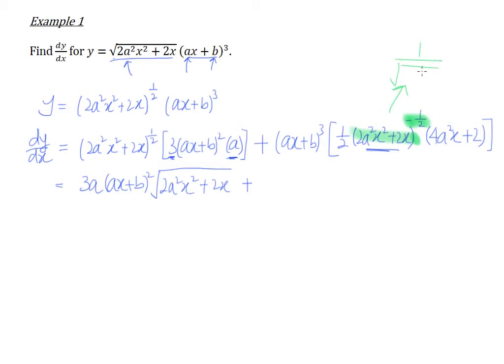So what exactly is this? This is actually 1 over the square root of 2a²x² + 2x. Here you go, this is a fraction. What we are left with, the rest will simply end up at a numerator here.